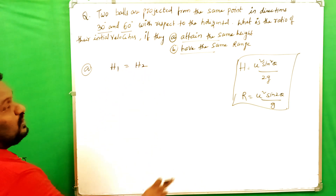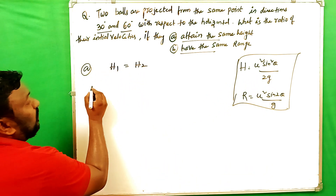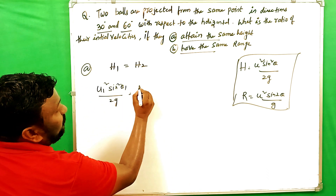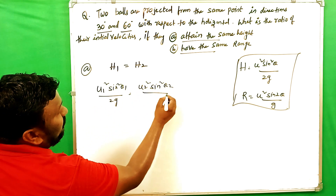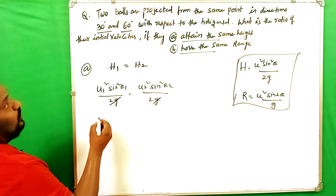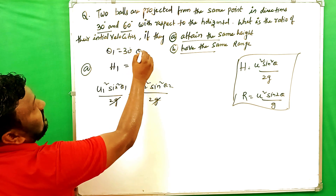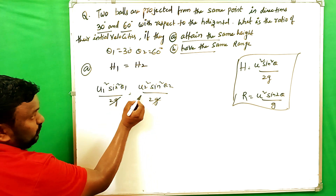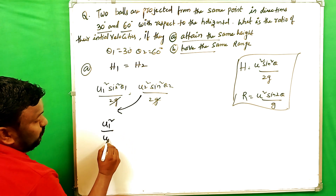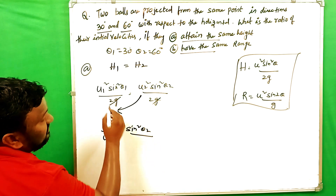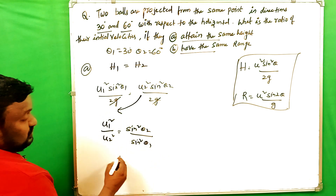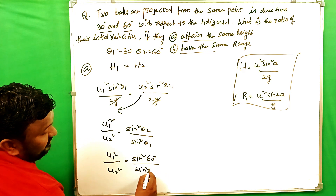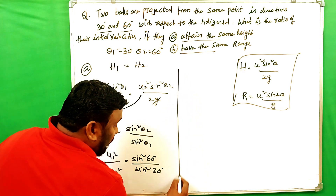So h1 = u1² sin²θ1 / 2g equals h2 = u2² sin²θ2 / 2g. The 2g cancels on both sides. Given θ1 = 30 degrees and θ2 = 60 degrees, rearranging gives u1² / u2² = sin²θ2 / sin²θ1 = sin²60° / sin²30°.